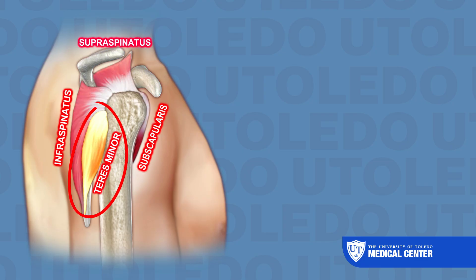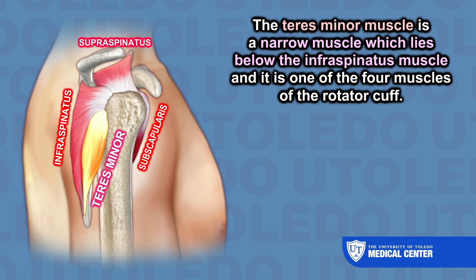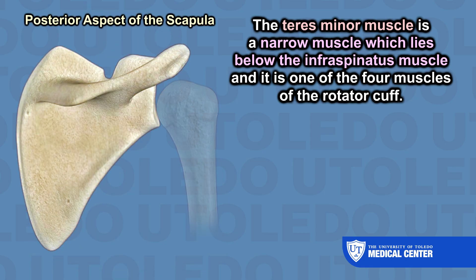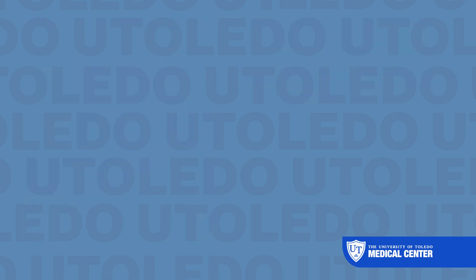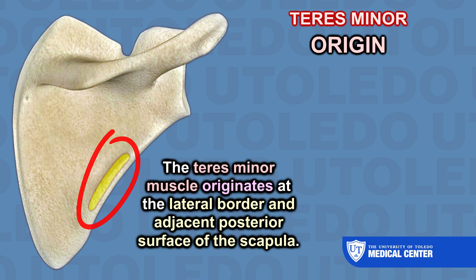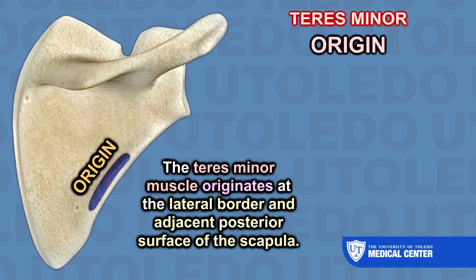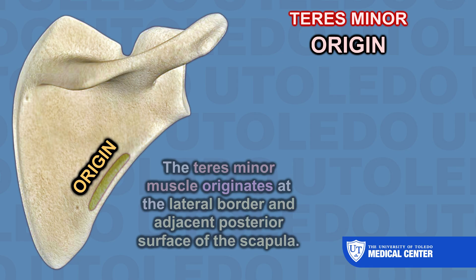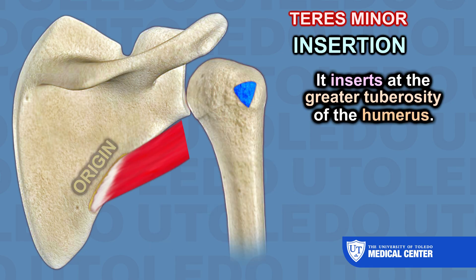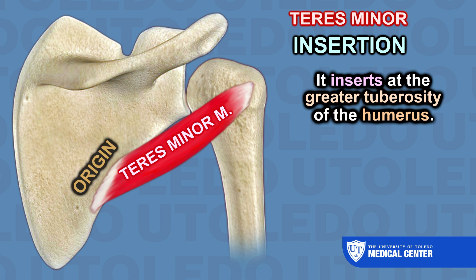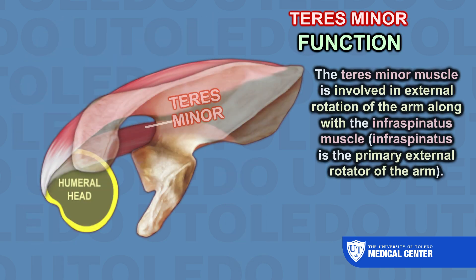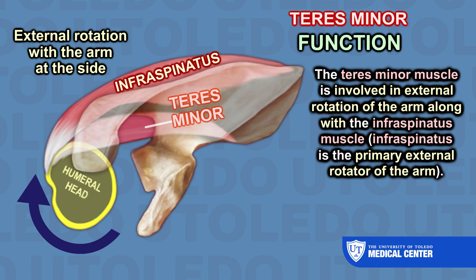Next is the teres minor. The teres minor muscle is a narrow muscle that lies below the infraspinatus, and it is one of the four muscles of the rotator cuff. It originates at the lateral border and adjacent posterior surface of the scapula, and inserts into the greater tuberosity of the humerus. Its function involves external rotation of the arm along with the infraspinatus, though the infraspinatus is the primary external rotator.